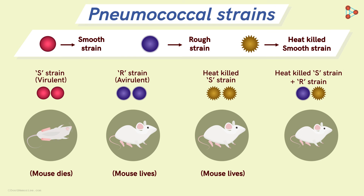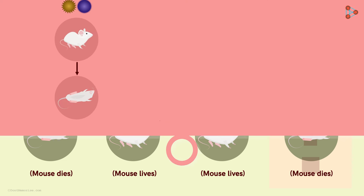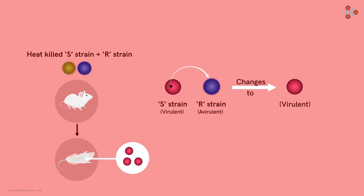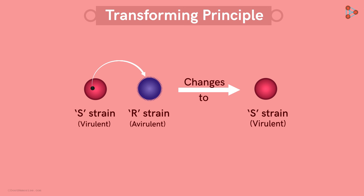Most of us would expect the mouse to survive because both are individually ineffective or avirulent. However, to his astonishment, the mouse did not survive. He concluded that there is something from the S strain that was passed on to the R strain, causing it to turn virulent. He also recovered live S strain from the body of the mouse, which further confirmed that the R strain was transformed into the virulent S strain. He named this the transforming principle. He did not know exactly what it was, but he predicted that it could be the genetic material.